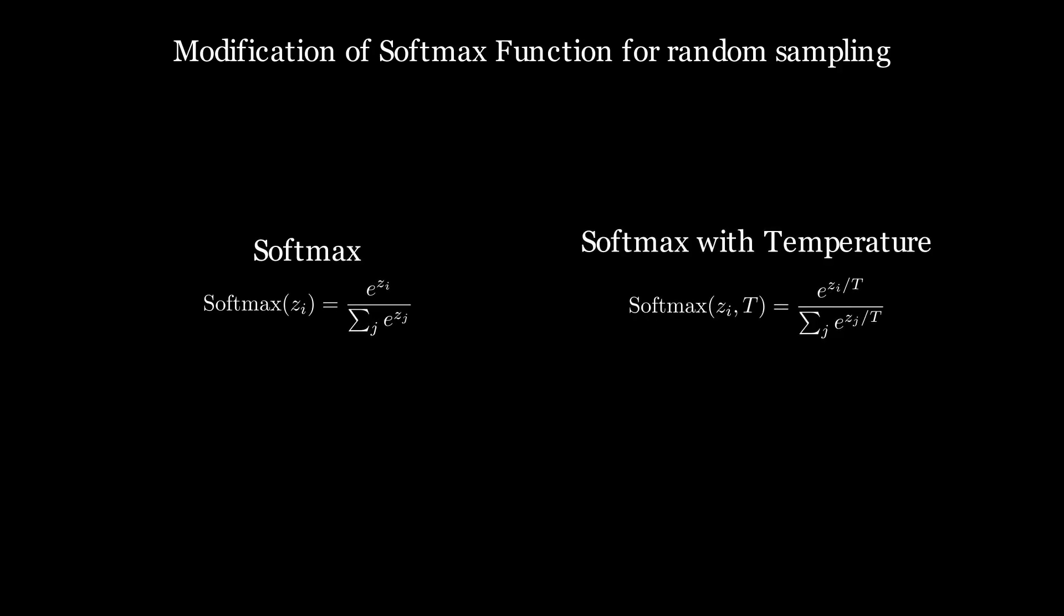This is where the temperature parameter comes into play, where we would like the user to have some control over whether they would like the output to be more deterministic or more creative and diverse. As a modification, we divide the logit's value by the temperature value before passing them to the softmax function.